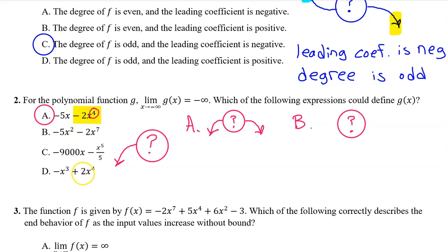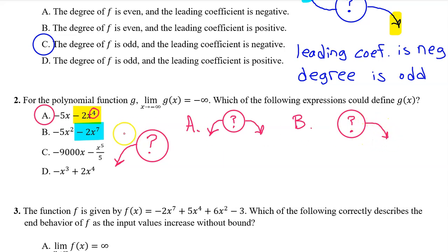I'm going to run through the other three answers just for practice. For option B, the leading term is negative 2x to the seventh power because this has the highest degree. The fact that the leading coefficient is negative tells us that the end behavior on the right is negative infinity. The fact that the degree is odd tells us that we have opposite end behavior on the left — so positive infinity on the left, which is not what we were looking for.